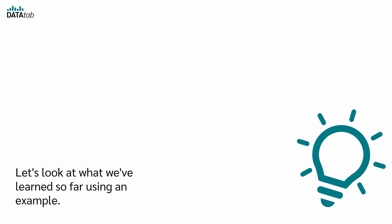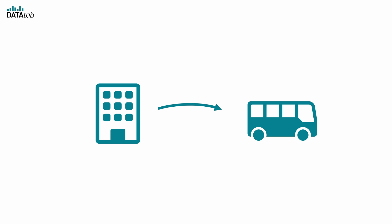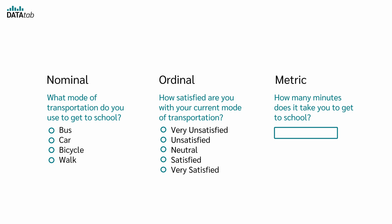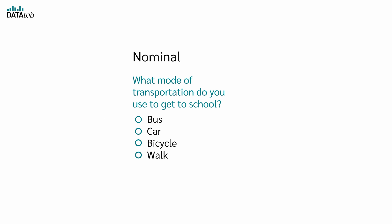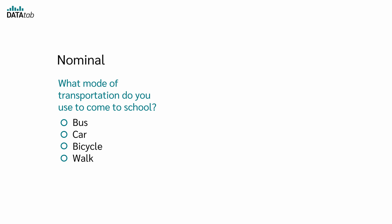Let's look at what we've learned so far using an example. Imagine you're conducting a survey in a school to understand how pupils get to school. Here are questions you might ask, each corresponding to a different level of measurement. The first question could be, what mode of transportation do you use to get to school? Bus, car, bicycle, walk? This is, of course, a nominal variable. The answers can be categorized, but there is no meaningful order. This means that bus is not higher than bicycle, walk is not higher than car, and so on and so forth.